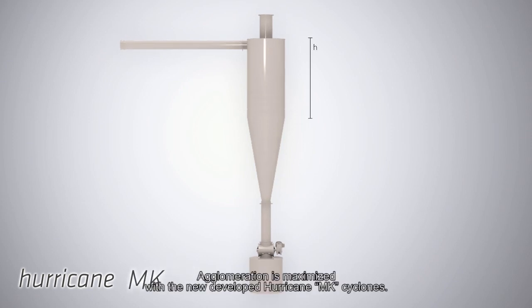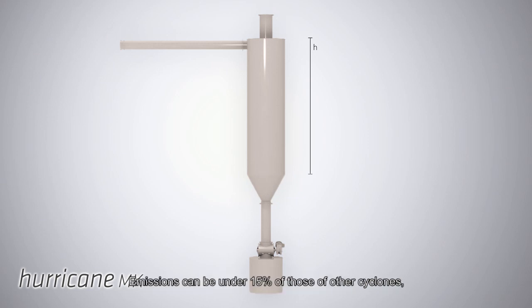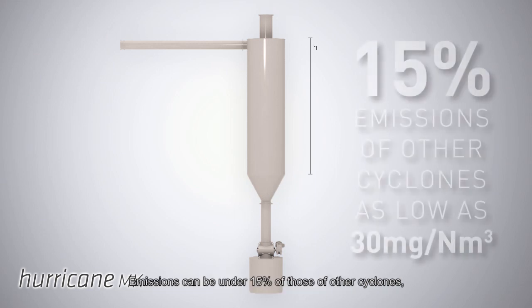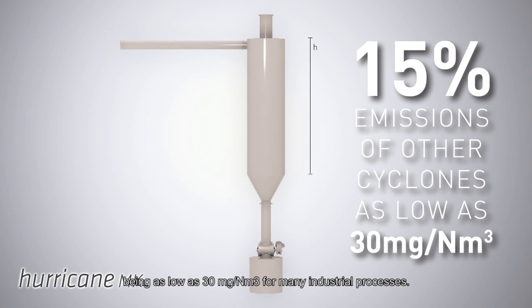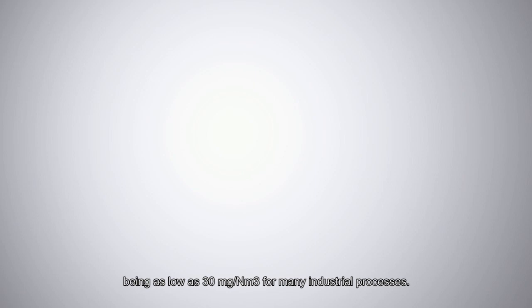Agglomeration is maximized with the newly developed Hurricane Mk cyclones. Emissions can be under 15% of those of other cyclones, being as low as 30 mg per normal cubic meter for many industrial processes.